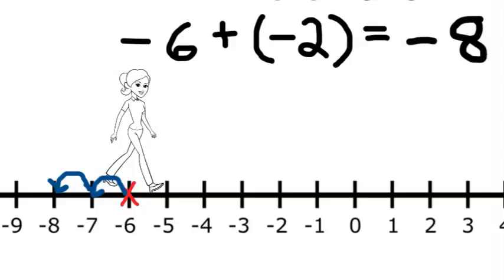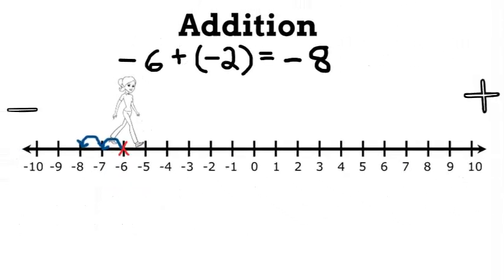So negative 6 plus negative 2 equals negative 8. Now, let's use the black and red chips. We start with 6 negative chips, add 2 more negative chips. What do we get? 8 negative chips. So our answer is negative 8.